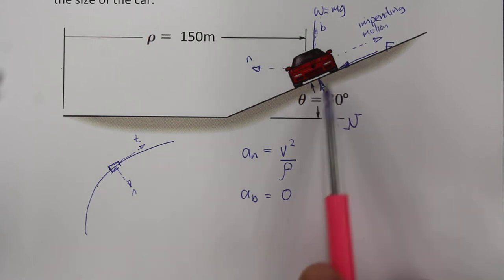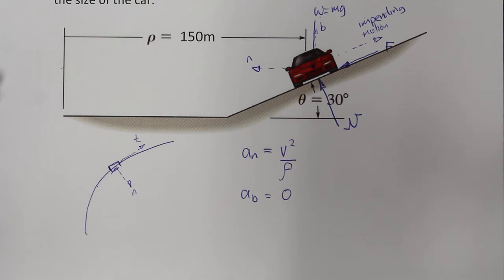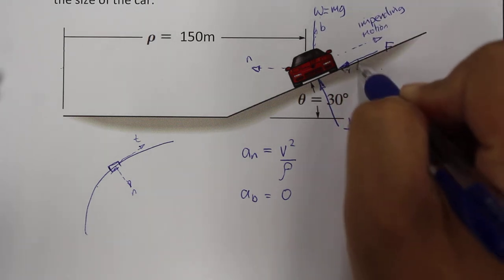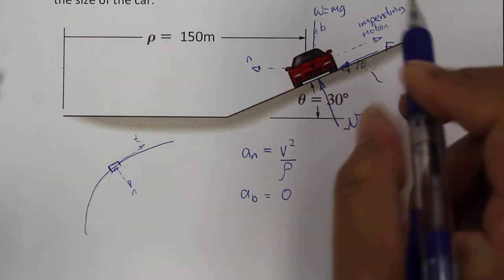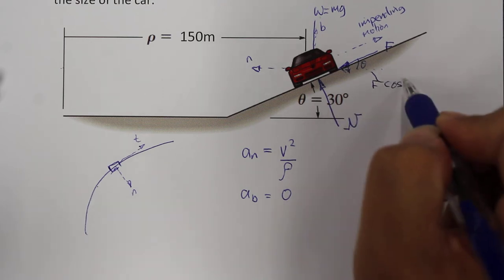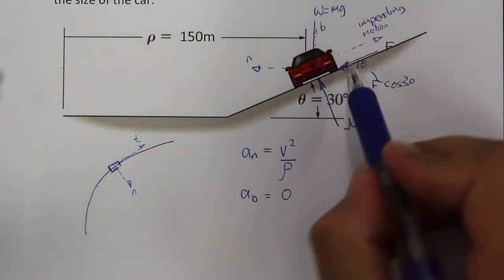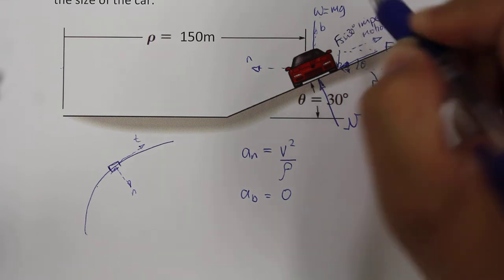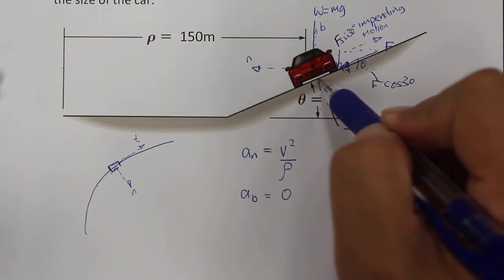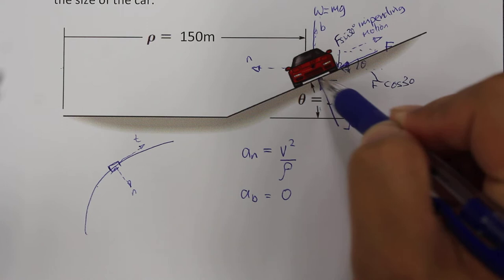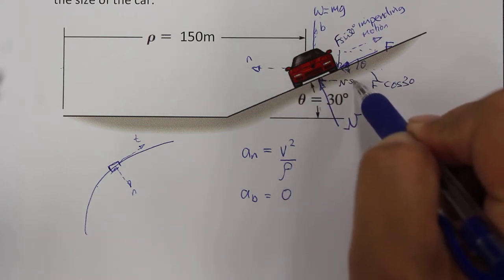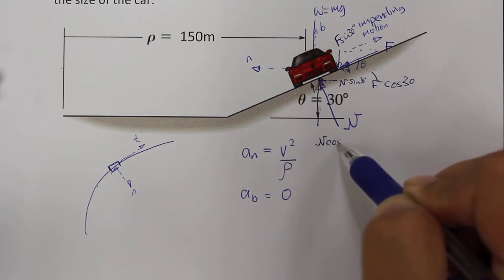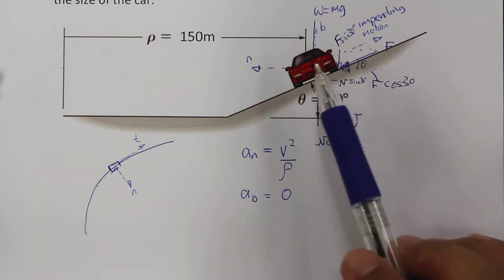Each of these forces F and N can be broken up into components. The friction force F has a component in the x direction equal to F·cos30°, and a y component equal to F·sin30°. The normal force N also has a component in the normal direction equal to N·sin30°, and a component equal to N·cos30°. We'll refer back to this when we look at the equations.